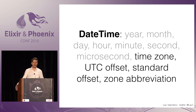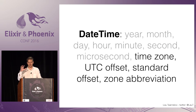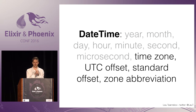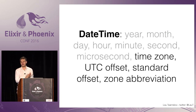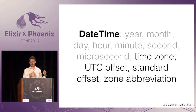A datetime is the result of a calculation where you also have time zones. What is the time right now in New York, which is the time zone we're in here in Florida as well? It's like an ephemeral struct that is based on the current time zone rules. In addition to what you have in a naive datetime, you have a time zone, a UTC offset, a standard offset, and a zone abbreviation. The reason I say it's ephemeral is because the rules can change — if you do the same calculation in 10 years, maybe it's different because the rules have changed.